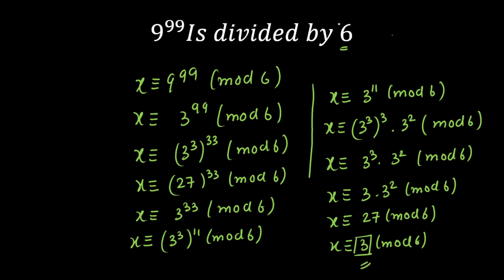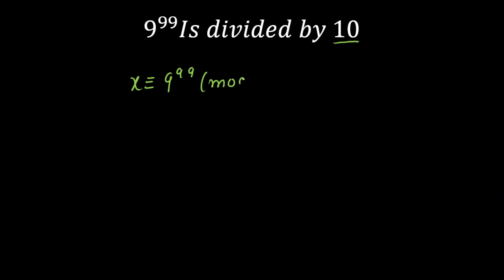Now I will do one more thing. Instead of taking 6, I'll change it to 10 — I'm going to take a 2-digit number. How are you going to tackle this problem with a 2-digit number? Feel free to pause the video and try with 10. In the next slide I will be solving that. I hope all of you got the answers. If you didn't get the answer, then no problem — I'm going to explain the logic here. The question is: if 9 raised to the power 99 is divided by 10, let's say x is the remainder, and x is congruent to 9 raised to the power 99, mod 10.